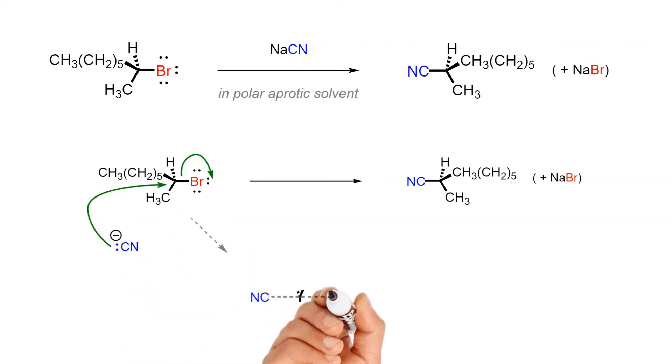The system will go through a transition state as shown, in which the attached alkyl groups have flattened out into a trigonal bipyramidal arrangement in which the negative charge is now developing on bromine and being lost from the cyanide nucleophile.